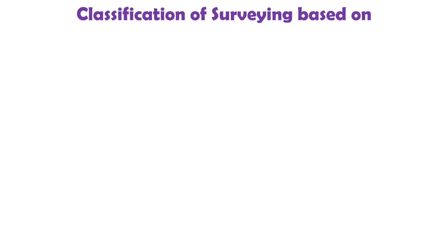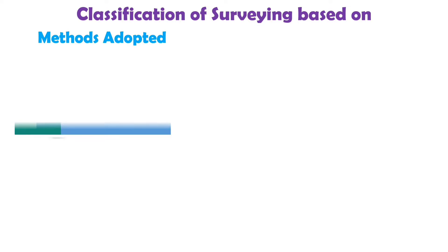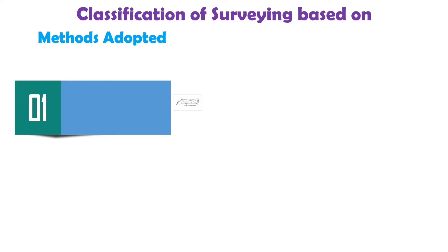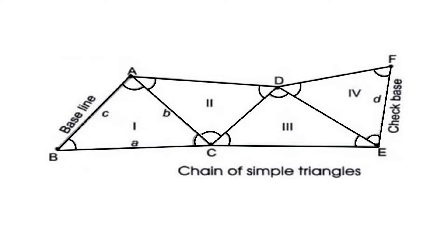Now let us see the classification of survey based on method adopted. The first method is triangulation survey. Triangulation is a basic method of surveying in which the area is divided into different triangles. When a large area is involved, this kind of survey is adopted. The entire area is divided into a network of triangles, and all angles are measured along with only one length, that is the baseline.